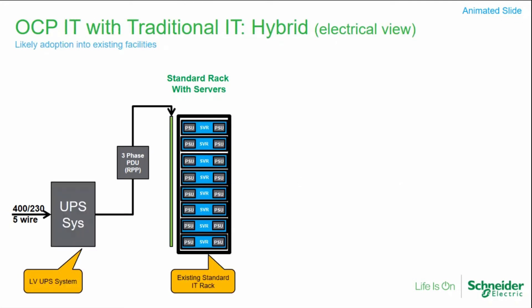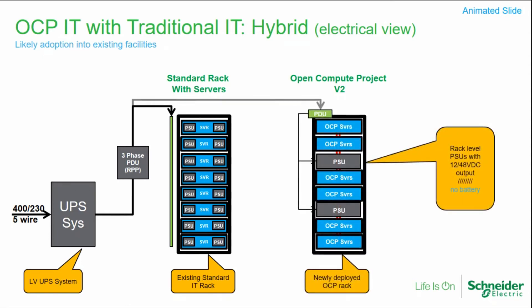When you look at this, you have to wonder if it's for everybody. If you have a data center with mixed loads — traditional servers with an upstream UPS system — you can deploy open compute right next to those racks, just without batteries inside the rack, which is what some enterprises already do. One open compute member like Fidelity who deploys open compute gear does it that way — the centralized UPS is there to support both OCP and traditional servers.